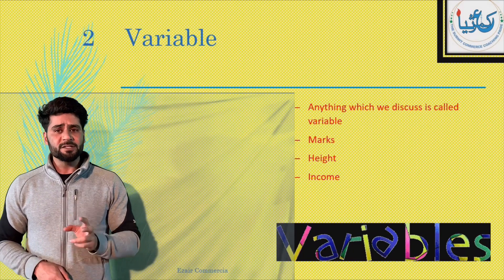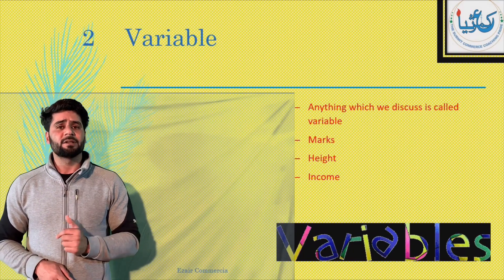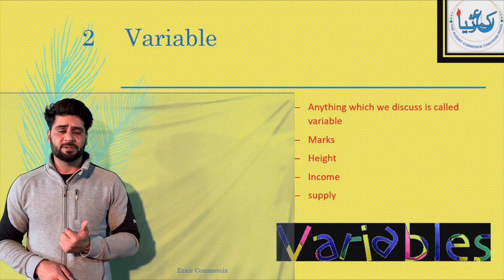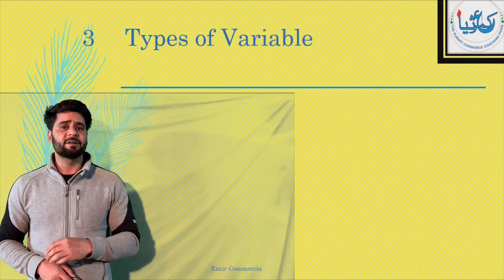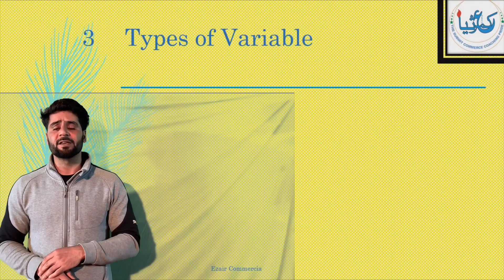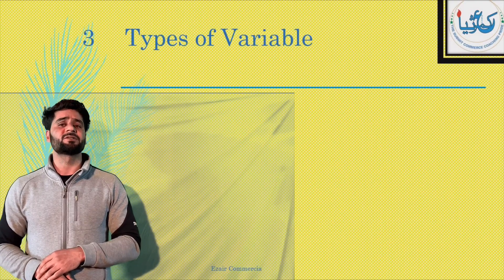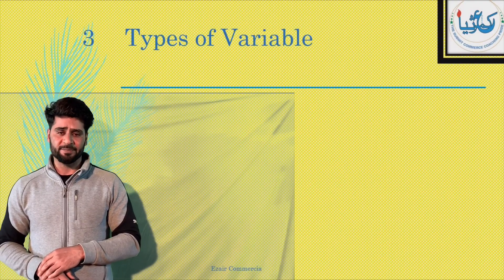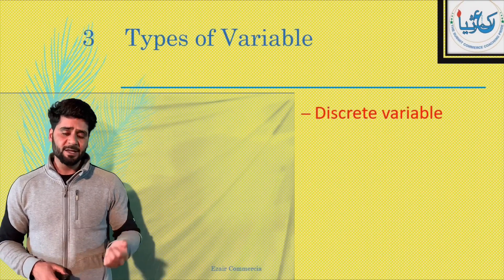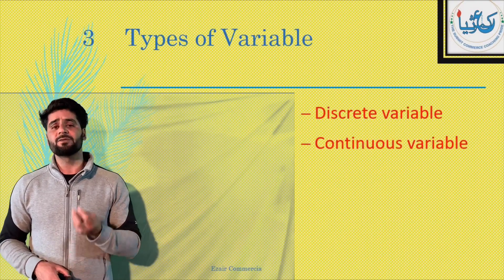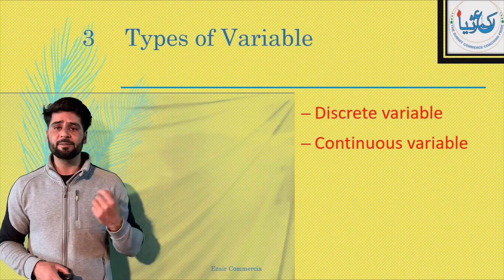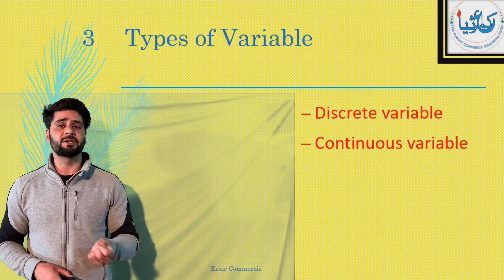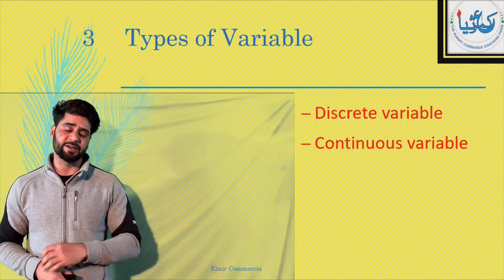Now this variable is of two types. The first one is discrete variable, and the second one is continuous variable.